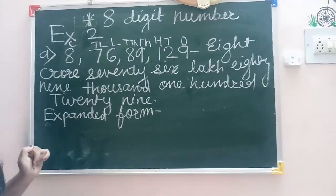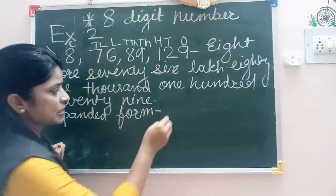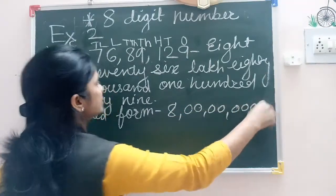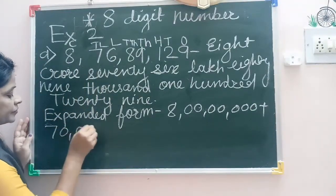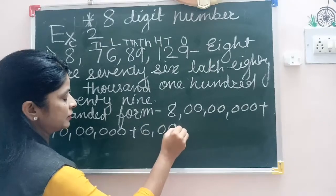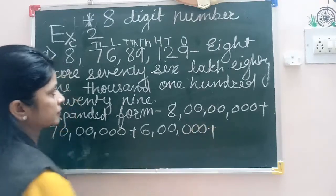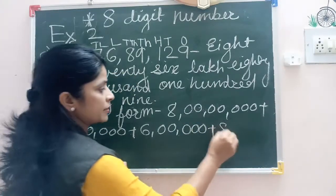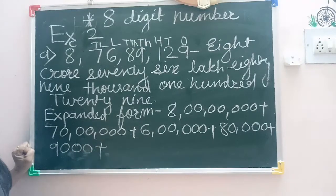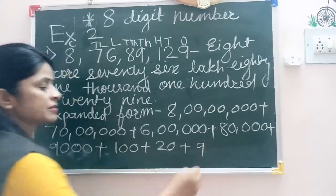What do you mean by expanded form? You have to write the place value of each digit. So what is the place value of 8, which is on the crore place? 8 multiplied by 1 crore, that is 8 crore. Then 7 multiplied by 10 lakh is 70 lakh. 6 multiplied by lakh is 6 lakh. 8 multiplied by 10,000 is 80,000. 9 multiplied by 1,000 is 9,000, plus 1 multiplied by 100 is 100, plus 2 multiplied by 10 is 20, plus 9 multiplied by 1 is 9.